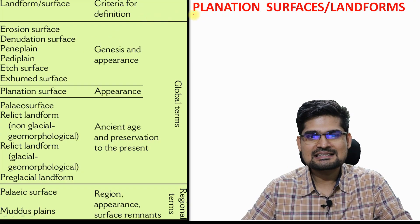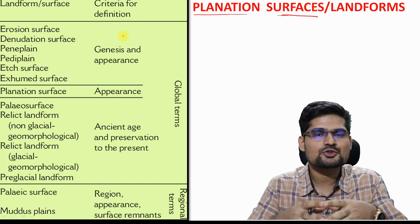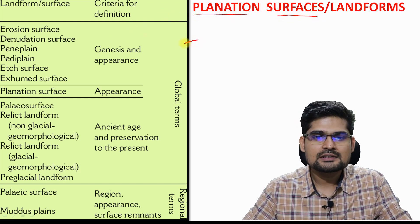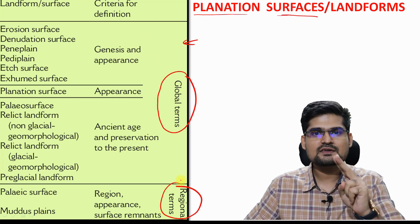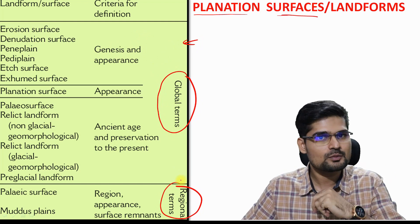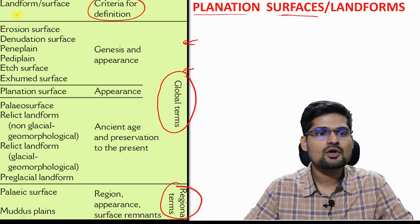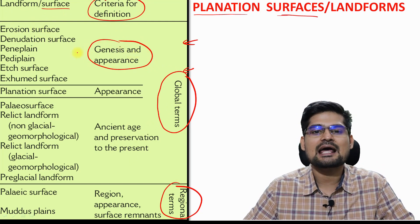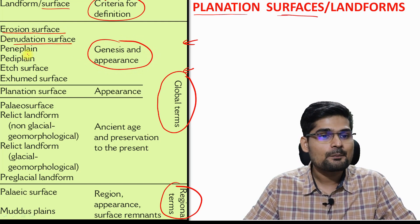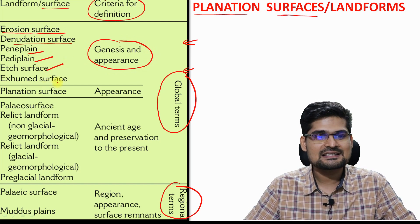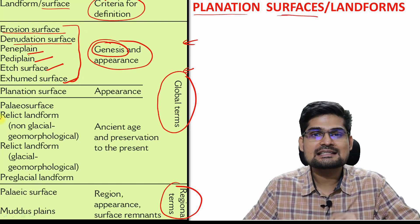Let's elaborate on erosional surfaces, which we also know as planation surfaces. There is a classification table with global terms and regional terms — one at global scale, one at regional scale. On the global scale, surfaces are defined by genesis and appearance. Based on genesis, we have erosion surface, denudation surface, penny plane, pedi plane, etched surface, and exhumed surface. Based on appearance, we have planation surface — it simply appears like a plane.